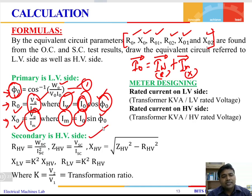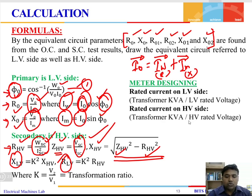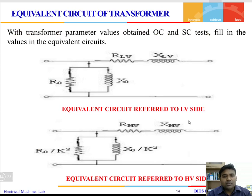Using the short circuit test data, first obtain the resistance on the high voltage side: R01 = Psc / Isc². The impedance Z01 = Vsc / Isc. Once we have R and Z, the reactance X01 = √(Z01² − R01²). We can then transfer the data from the high voltage side to the low voltage side or vice versa depending on our requirement.